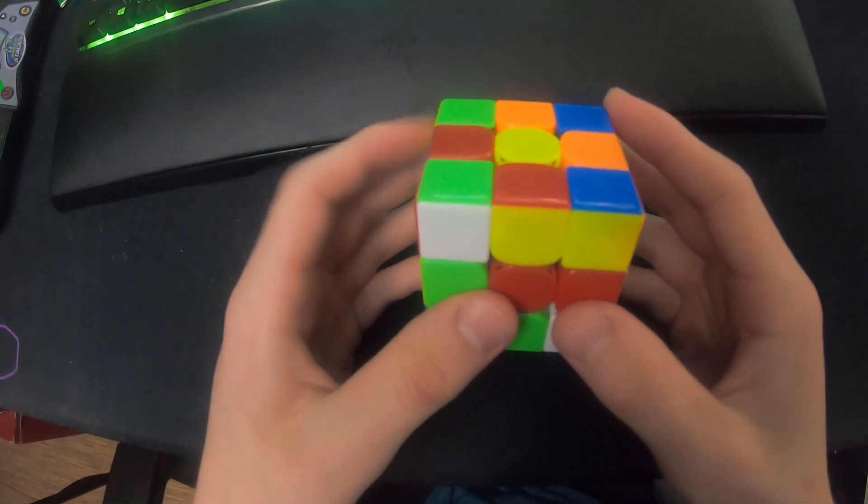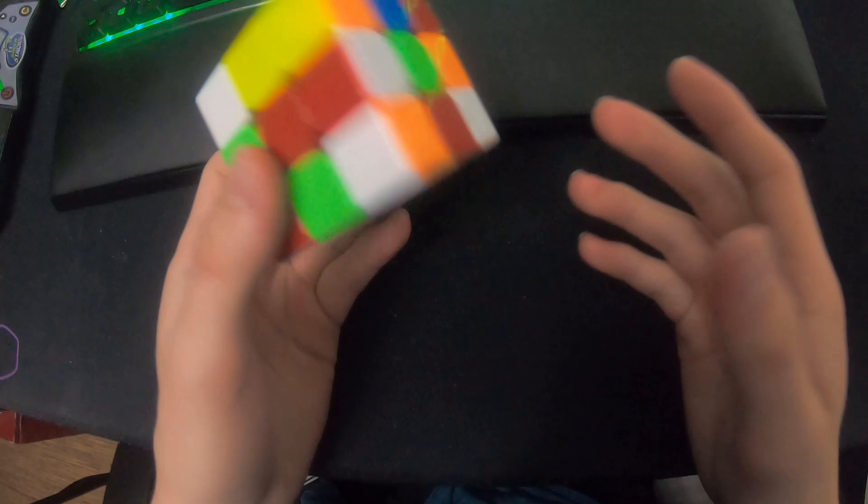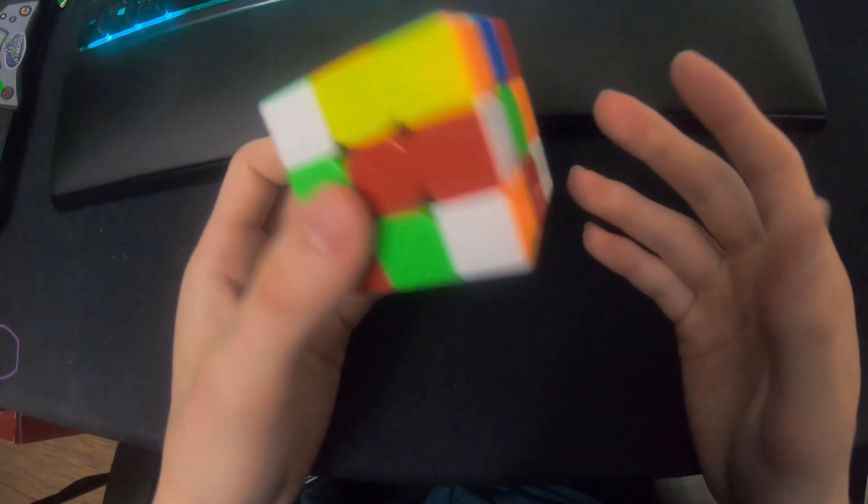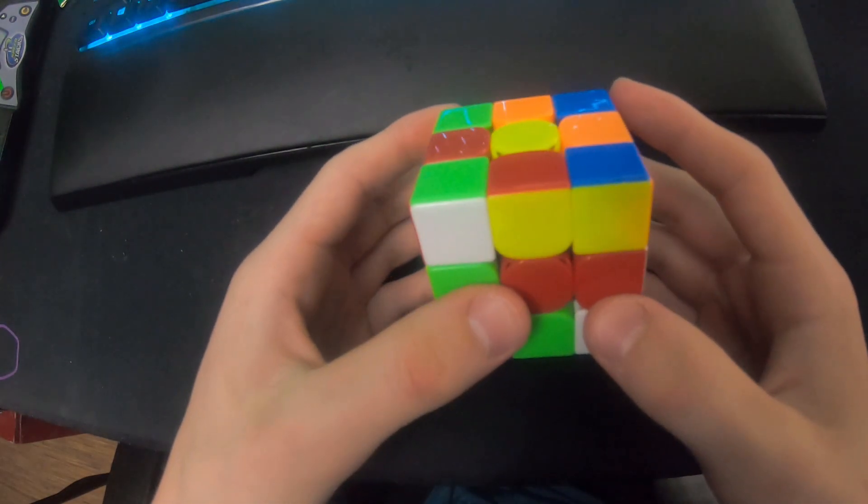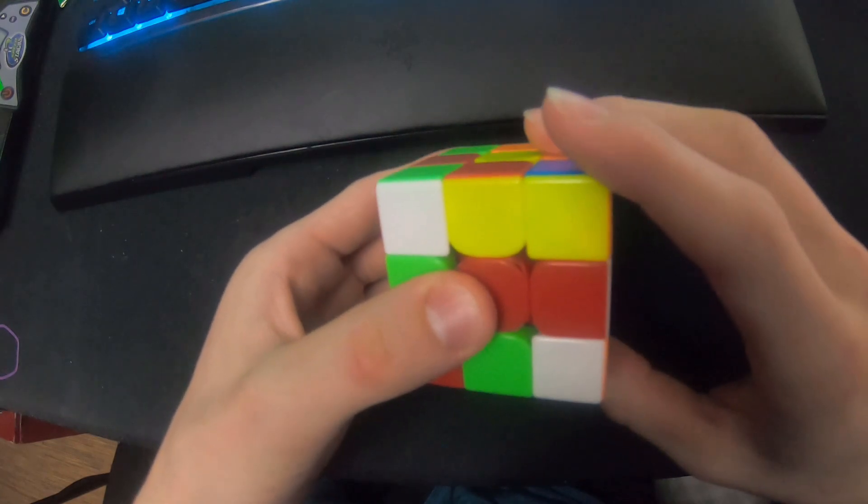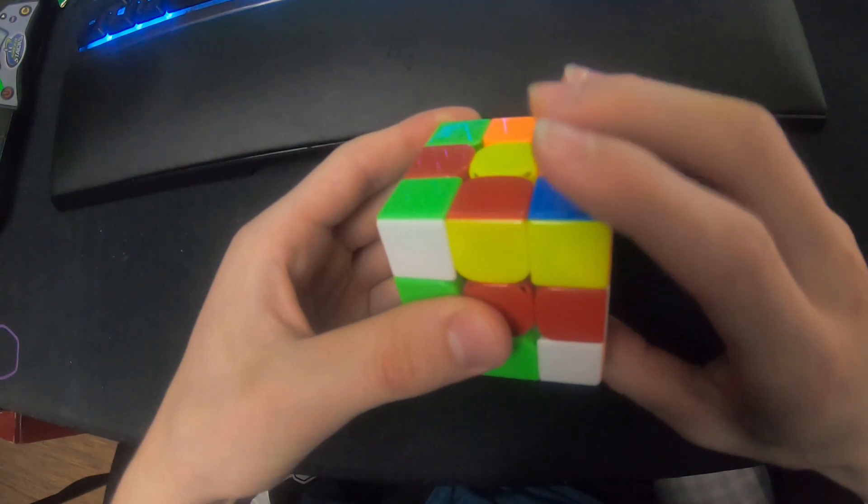Now I'm going to go more in-depth into my finger tricks and techniques that made this as fast as it was. For cross, I started with a re-grip, putting my hand in this position so I can just spam all the way until I finish the first pair.